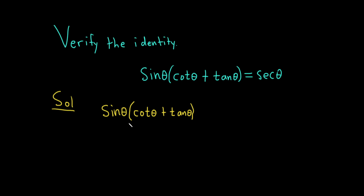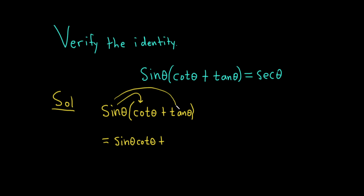So the only thing we can really do here is distribute the sine of theta. Let's go ahead and do that. So we have sine times cotangent — this is equal to sine of theta times the cotangent of theta, and then plus sine times tangent, so this is the sine of theta times the tangent of theta.